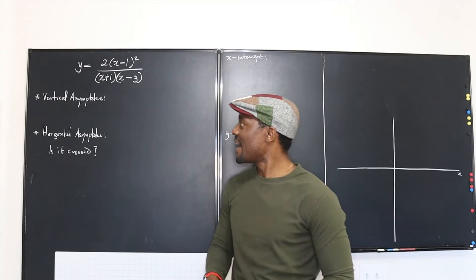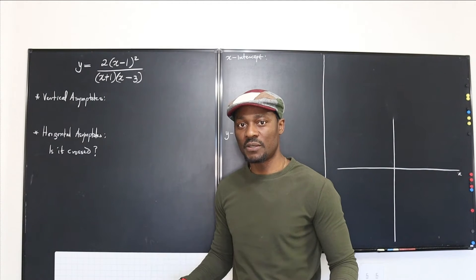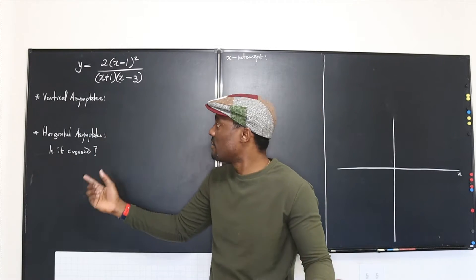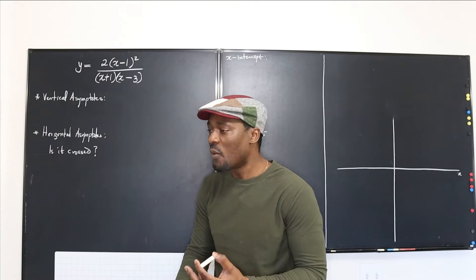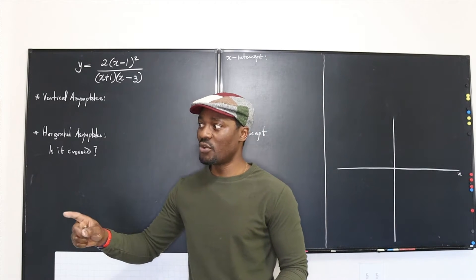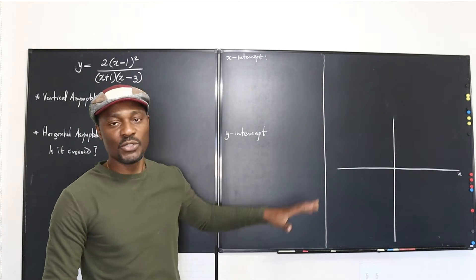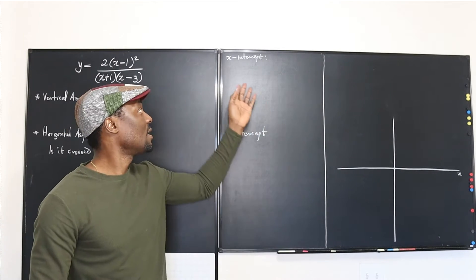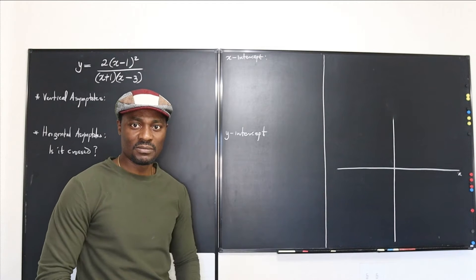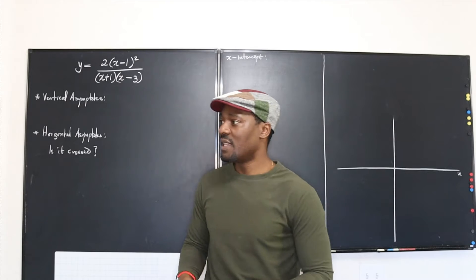I have written the things you need to look out for every time you need to sketch a function without using calculus. The most important things are: knowing what the vertical asymptotes are, knowing what the horizontal asymptote is, and checking whether the function will cross that asymptote. You also want to know the x-intercept, where the graph crosses the x-axis, where it crosses the y-axis, and the behavior of the graph based on the multiplicity of the x-intercept.